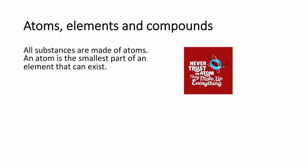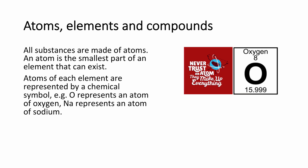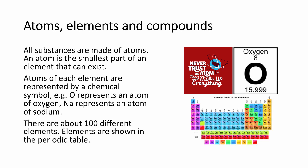All substances are made of atoms. An atom is the smallest unit of matter that can undergo chemical change. Atoms of each element are represented by a chemical symbol. For example, oxygen is represented by the letter O and sodium is represented by the symbol Na, because it is named after the Latin name Natron. There are approximately a hundred different elements and they are all to be found in your periodic table of elements.